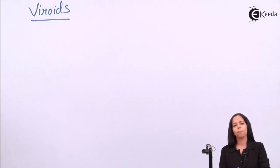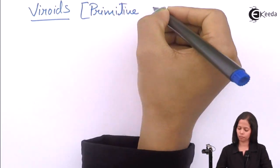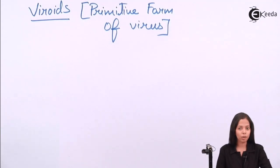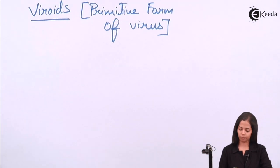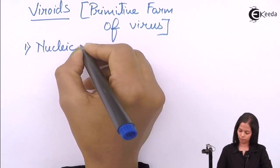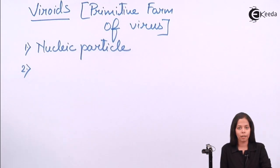Now we'll see who are called as viroids. Viroids are called as primitive form of virus because they don't contain capsule or covering. They contain only nucleic acid. That is why they are called as nucleoparticle or nucleic particle. Now which nucleic acid is present in viroid? The acid which is present is RNA.